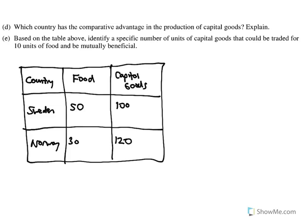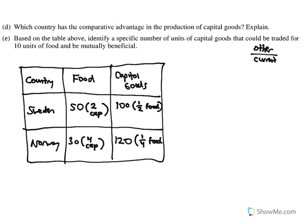To find comparative advantage, I need to calculate opportunity costs. The formula I teach for output problems is 'other over current' — the other number in the row divided by the current number you're looking at. For Sweden in the food box (50), the other is 100, so 100 divided by 50 equals 2 capital goods. The reciprocal goes in the capital goods box: 50 divided by 100 equals one-half of a food unit. For Norway: 120 divided by 30 equals 4 capital goods, and the reciprocal is one-fourth of a food unit.